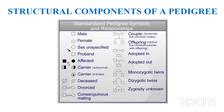Affected people or disease-affected persons are shown with fully colored symbols. Carriers are shown with half-colored symbols. An X-linked carrier is shown with a small dot. A deceased individual is shown by a cross-out symbol. Divorced is shown by a cross-out between the lines. Consanguineous mating — relatives or cousins — is shown with double lines. A couple is always shown with a horizontal connection, and offspring or siblings are shown with a vertical connection above.